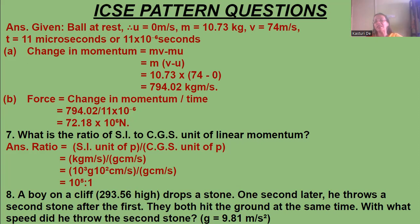What is the ratio of the SI to CGS unit of momentum? The SI unit is kg·m/s and the CGS unit is g·cm/s. So the ratio = (10³ g × 10² cm/s) / (g·cm/s) = 10⁵. The ratio is 10⁵.